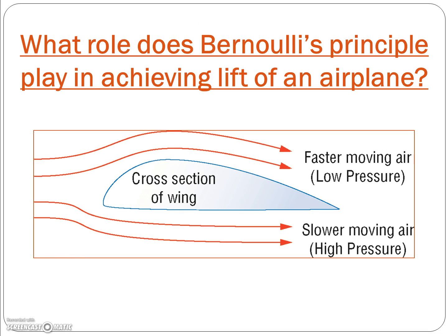This is how it works. Air moves faster as it travels over a curved wing. Bernoulli's principle explains that air creates less pressure as its speed increases. The pressure above the wing falls, and the wing is pushed upward by the higher pressure air flowing underneath it. The wing is lifted up as a result.